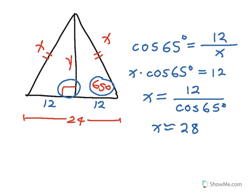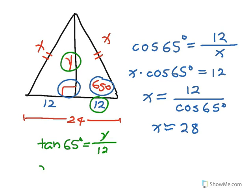Now for Y, I could use the hypotenuse of 28 and the cosine of 65 degrees as Y over 28. Or, with respect to the 65 degree angle to solve for Y, I can use the tangent ratio — opposite over adjacent — using exact values for accuracy. So the tangent of 65 degrees equals Y over 12. Therefore Y is equal to 12 times the tangent of 65 degrees. Entering that on my calculator, Y is approximately 26 to the nearest whole number.